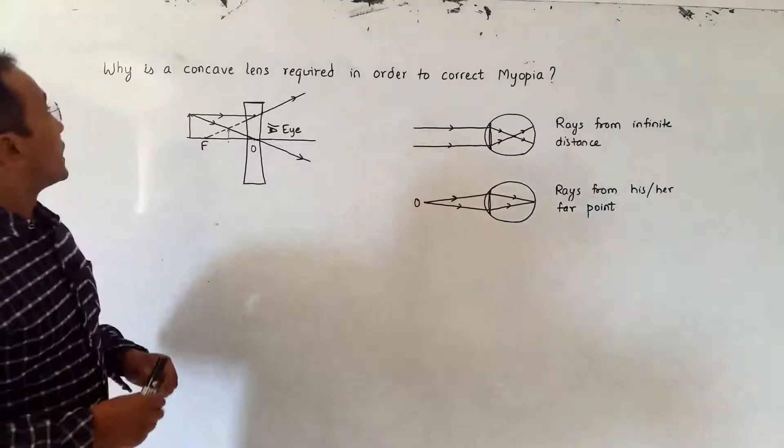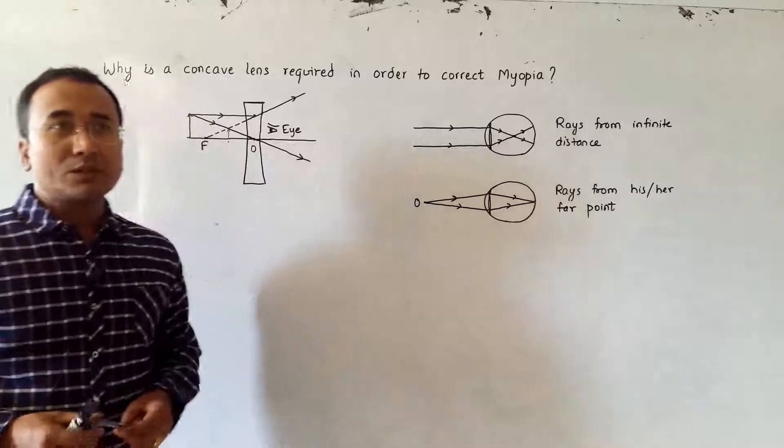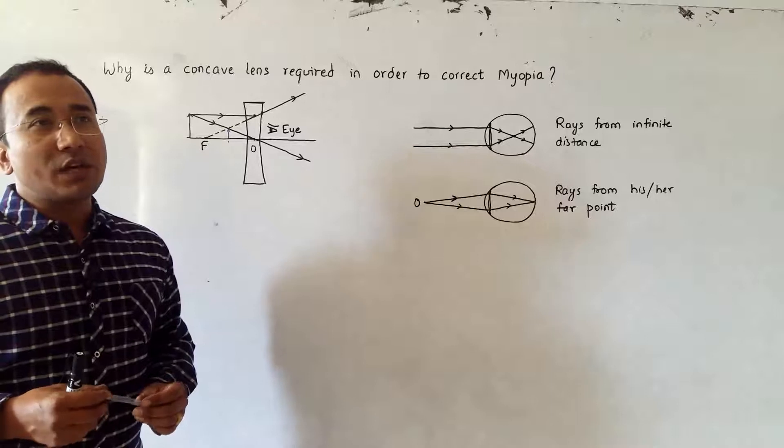The question for today is: why is a concave lens required in order to correct myopia? As you know, myopia - as I myself am suffering from it - is a condition in which I cannot see far objects, but I can see near objects.